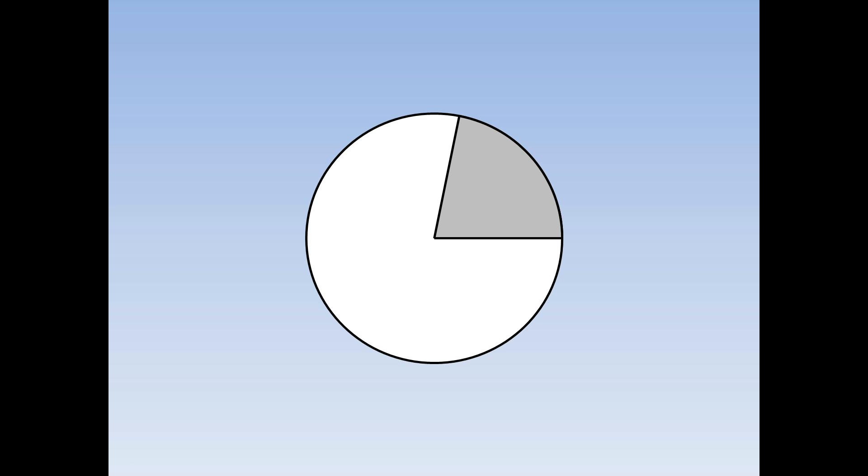To draw a segment, first of all draw a sector of a circle, then draw a chord across it, and this area is the area of the segment.